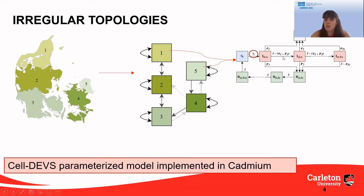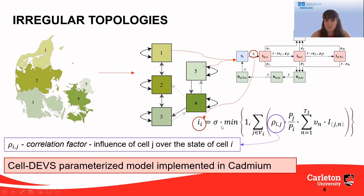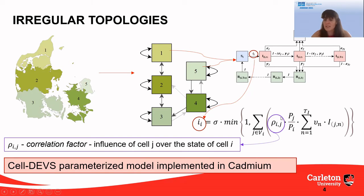So how do we include our disease spread model in this topology? We have a model where individuals are susceptible, infected, recovered, or dead, and we use the relationship between cells to establish how the susceptible population moves to infected. To calculate this ratio — the ratio of susceptible individuals that become infected — we use the correlation factor between two cells, which represents the influence that one cell has on another. For example, for cell four, we calculate the people that get infected based on this correlation factor: cell five has a large influence, cell four also has a large influence, and cell three has a small influence. We model that with these correlation factors.